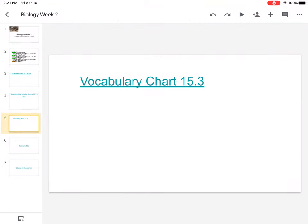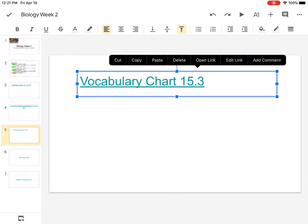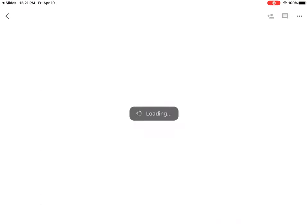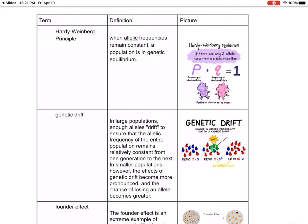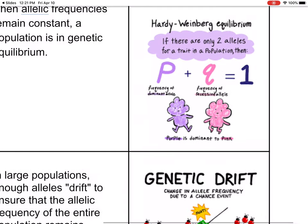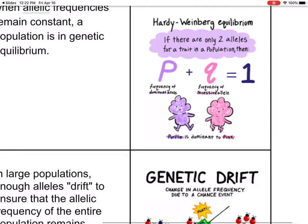Let's look at vocabulary chart 15.3. The Hardy-Weinberg principle says: when allelic frequencies remain constant, a population is in genetic equilibrium. This is the frequency of dominant alleles (big P) plus frequency of recessive alleles (little Q) equals 1. So purple is dominant to pink — if there are only two alleles for a trait in a population, purple is going to be dominant.